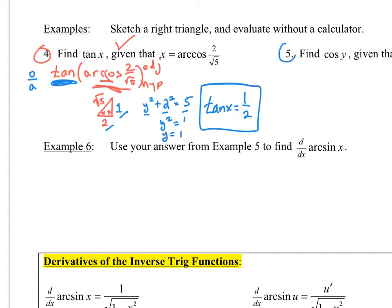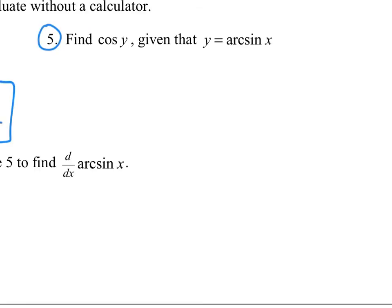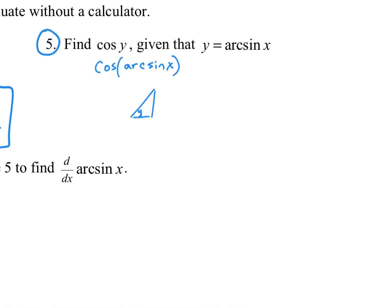Try number 5 yourself. The sine of x is opposite over hypotenuse, so from arc sine of x, I put x over 1. Finding the missing side: 1² minus x² gives the adjacent side. Going to the cosine and reading off the triangle — adjacent over hypotenuse — this gives √(1 minus x²) all over 1, which is simply √(1 − x²).